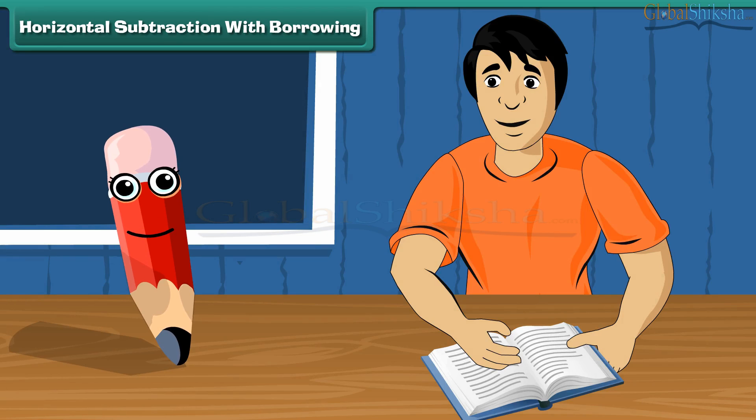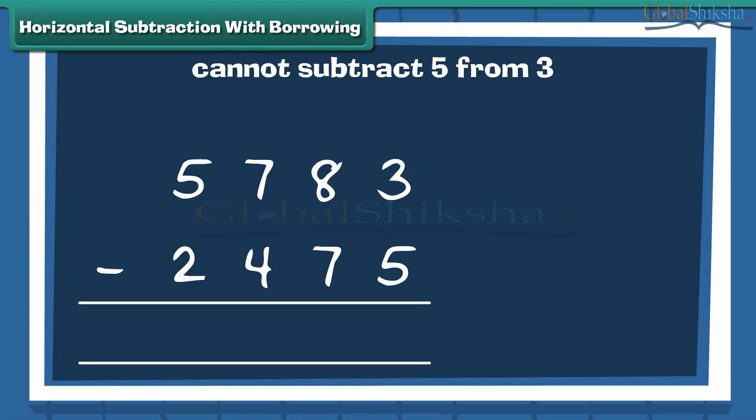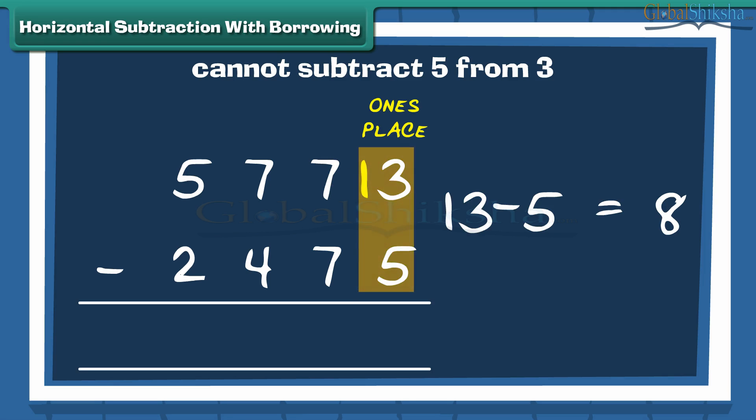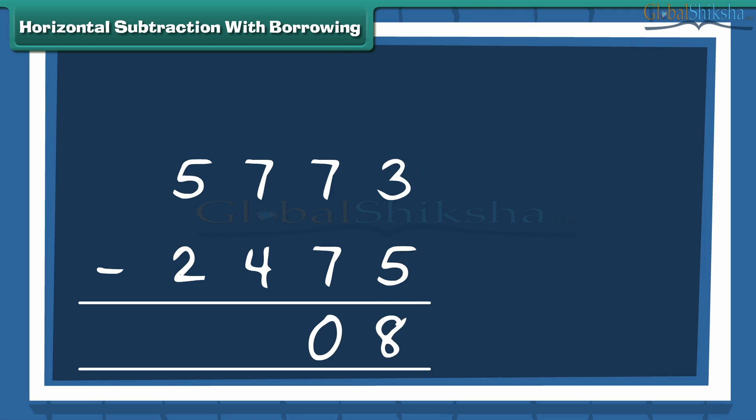We write the bigger number above and smaller number below it. Now subtract the numbers at 1's place, the 10's, next 100's, and at last 1000's.